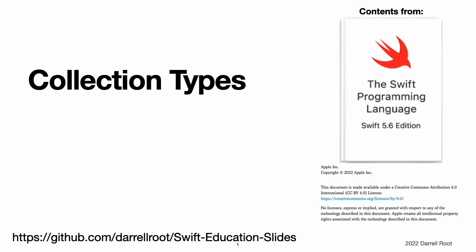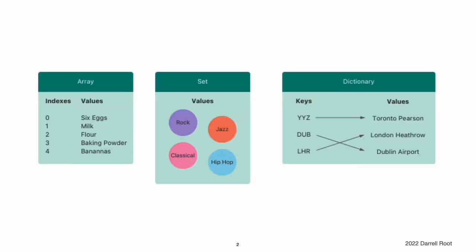Collection Types. Swift provides three primary collection types, known as arrays, sets, and dictionaries, for storing collections of values. Arrays are ordered collections of values. Sets are unordered collections of unique values. Dictionaries are unordered collections of key-value associations.